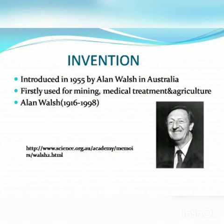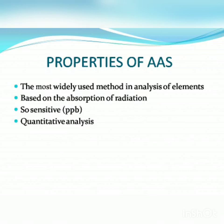The technique uses basically the principle that free atoms in the gas phase, generated in an atomizer, can absorb radiation at specific frequencies. Atomic absorption spectroscopy quantifies the absorption of ground state atoms in the gaseous state. The atoms absorb ultraviolet or visible light and make transitions to higher electronic energy levels. The analyte concentration is determined from the amount of absorption.